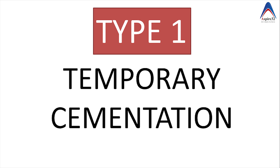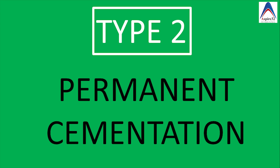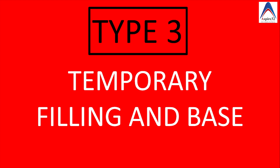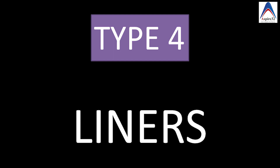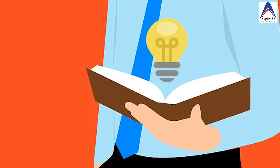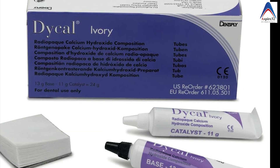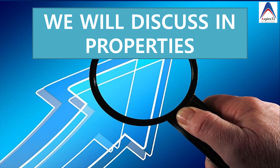Type 1 is used for temporary cementation. Type 2 is used as a permanent cementation material. Type 3 was mostly made for temporary filling and as a base. Type 4 was mostly used as a liner. You may ask why someone would use zinc oxide eugenol cement as a liner when we have better materials like calcium hydroxide — we will discuss that in the properties section.